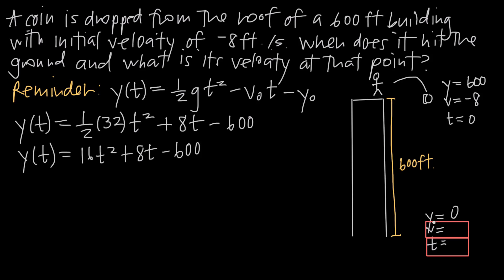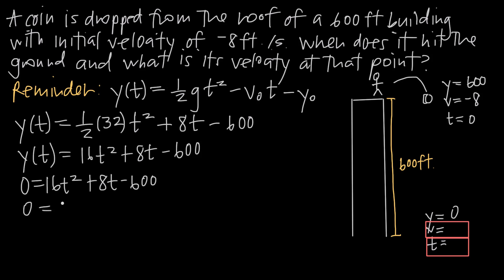We'll use this position function we just found. We know that when the coin hits the ground, y equals 0. So we set 0 equal to 16t squared plus 8t minus 600 and solve for t. We can't factor the right-hand side easily, so let's complete the square. To do that, we need the coefficient on t squared to equal 1, which means we divide everything through by 16. That gives us 0 equals t squared plus one-half t minus 75 over 2.